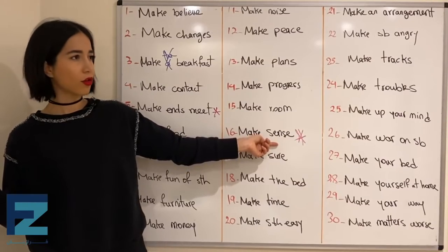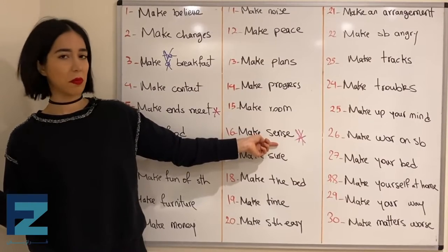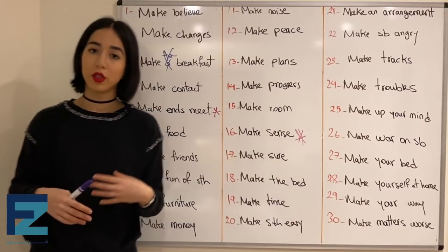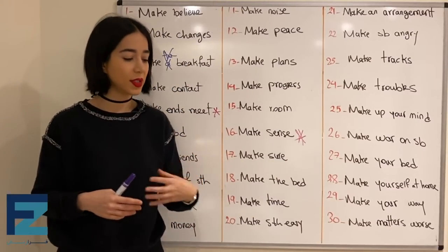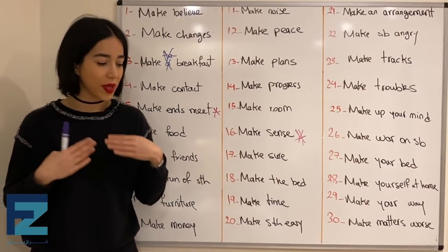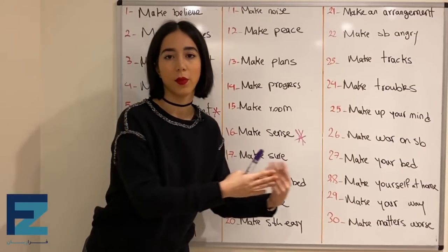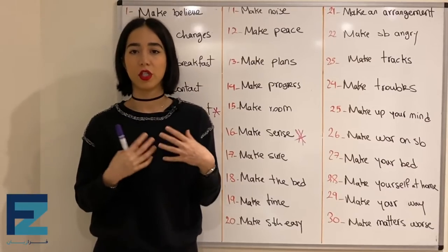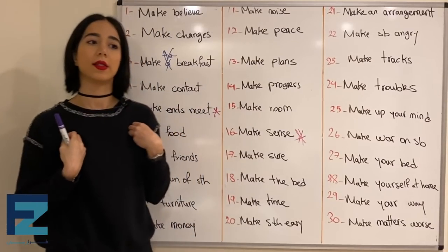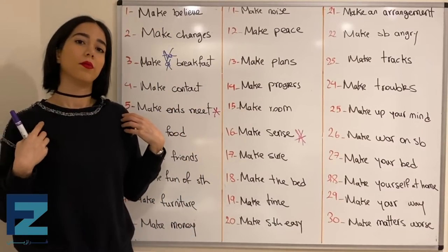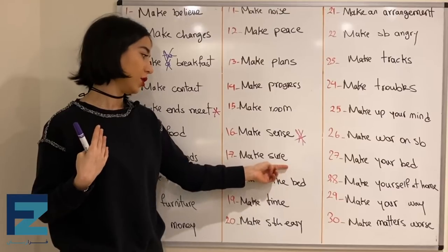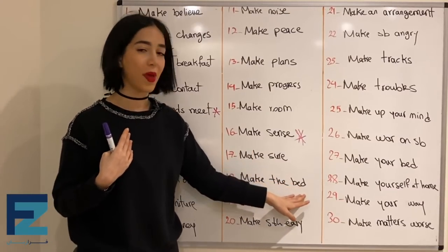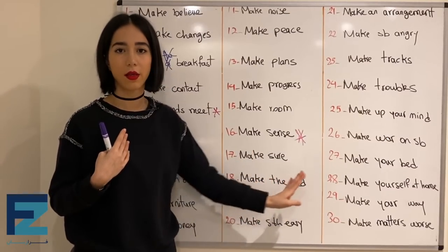Number seventeen: make sure — means to become certain about something, راجع به یه چیزی مطمئن شدن. Number eighteen: make the bed — to tidy up the bed, تخت مرتب کردن. Every morning I make the bed.